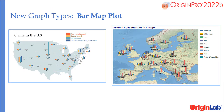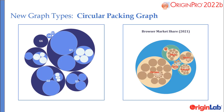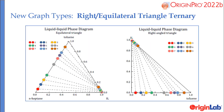Several new graph types have been added: bar map plot, spiral bar chart, circular packing graph, and equilateral or right triangle ternary plots.